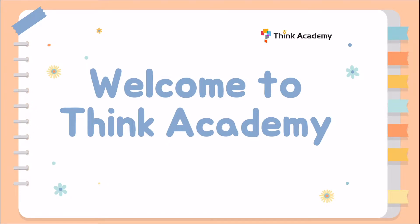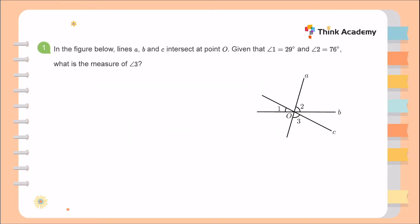Welcome to Think Academy July Grade 4 Math Challenge. Let's take a look at the first question. In the figure below, lines A, B, and C intersect at point O. Given that angle 1 is 29 degrees and angle 2 is 76 degrees, what is the measure of angle 3?